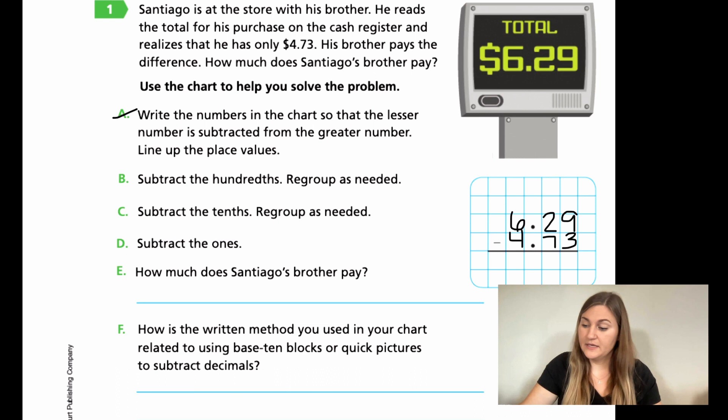Alright. Now for B, it says subtract the hundredths. Remember, hundredths is two place values away from the decimal. Just like a hundred has two zeros, it's going to be two place values away from the decimal. So that means the nine and the three. Nine minus three is six. Regroup is needed.